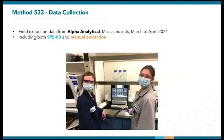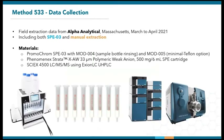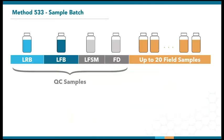In the following sections, I will be discussing Method 533 results in detail, including detection limits, background, accuracy, and precision. Alpha Analytical from Massachusetts have been very generous to share with us their field extraction data on both the SPE03 and vacuum manifold. Their SPE03 was configured with the Mod004 sample bottle rinsing feature and Mod005 minimal Teflon option. All extractions were performed using PhenomenX wax cartridges. A SCIEX 4500 triple-quad and Exion LC UHPLC were used for the analysis. As required by the method, each sample batch includes 4 QC samples alongside a maximum of 20 field samples. This allows us to look at various aspects of the extraction performance.